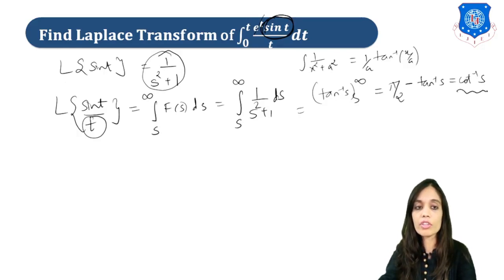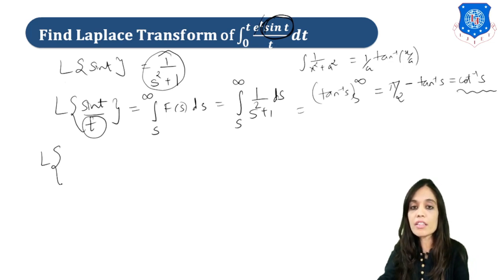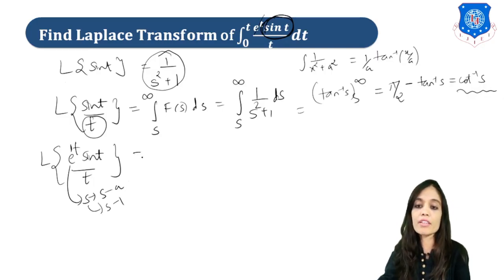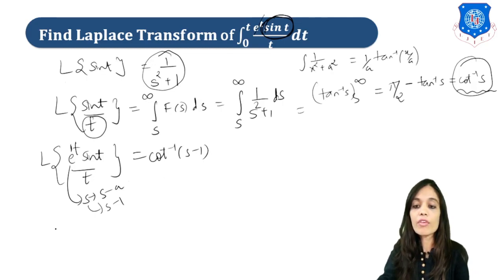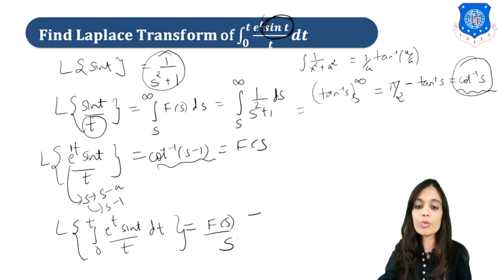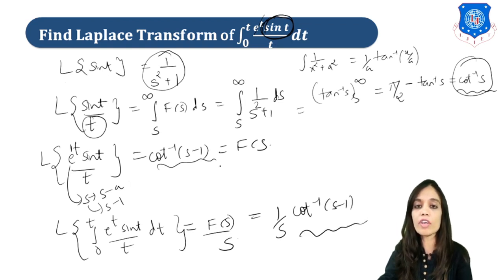The final answer for L{sin(t)/t} is cot⁻¹(s). Now let us bring in the e raised to t. Apply the first shifting theorem: replace s by s minus a. Here a equals 1, so replace s by s minus 1, giving cot⁻¹(s − 1). Now the only remaining step is to bring in the integral from 0 to t. The formula is F(s) upon s, so the final answer is (1/s) cot⁻¹(s − 1).